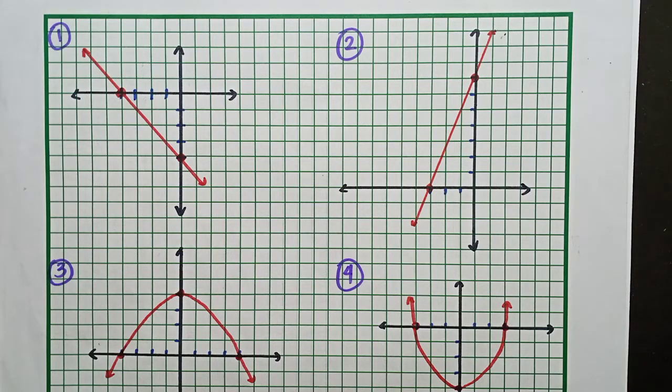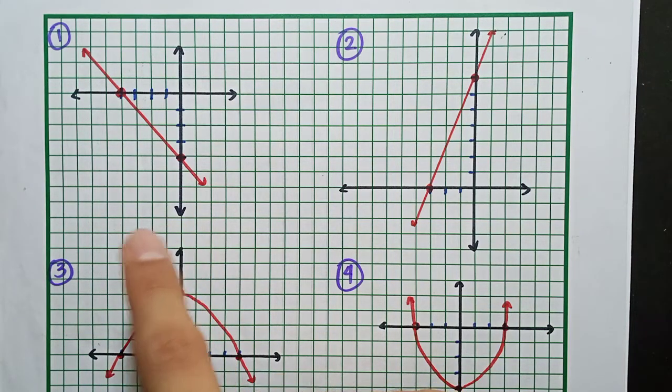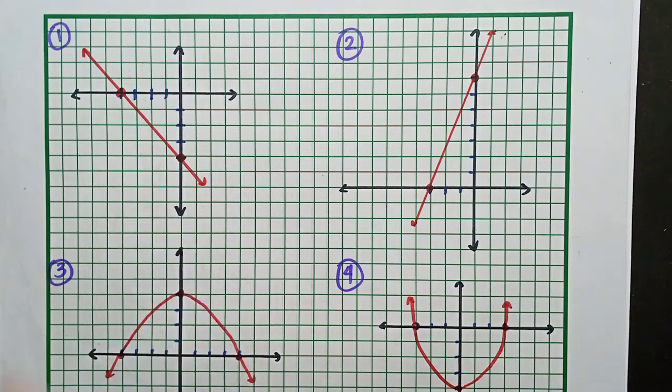Let's start with number 1. We have this graph. Remember, the x-intercept is where the point lies on the x-axis, and the y-intercept is where the point lies on the y-axis.